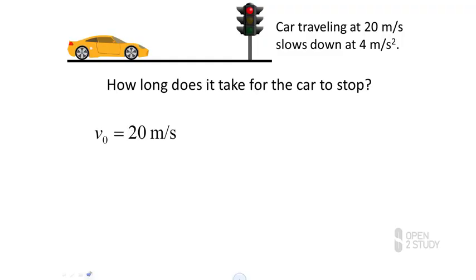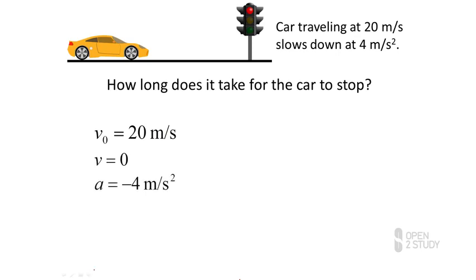We can figure out from this that our initial velocity v₀ is 20 metres per second. Our final velocity — that's when we've come to rest — is going to be zero. Our acceleration is 4 metres per second squared, they've told us.